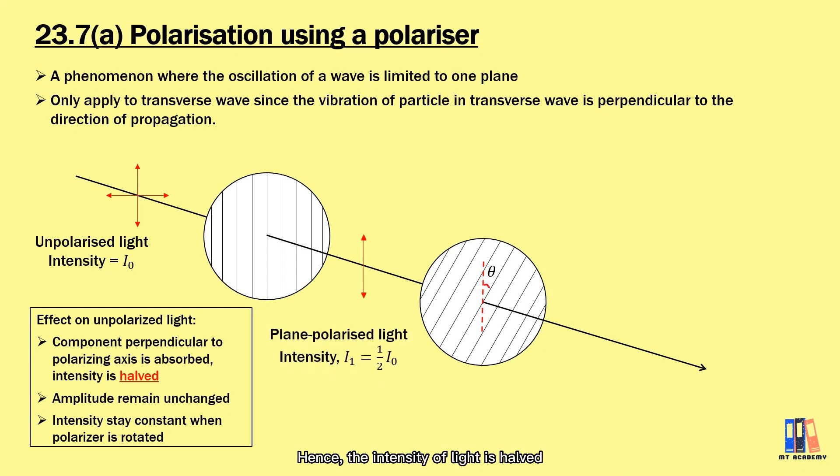Polarizer only allows those parallel to its polarizing axis to pass through. Hence, the intensity of light is half although the amplitude is unchanged. From here, we have the intensity is equal to half of the original intensity. And if we rotate the polarizer, it is still constant all the time.